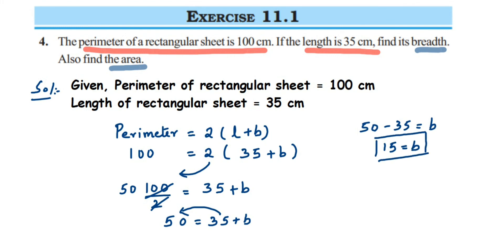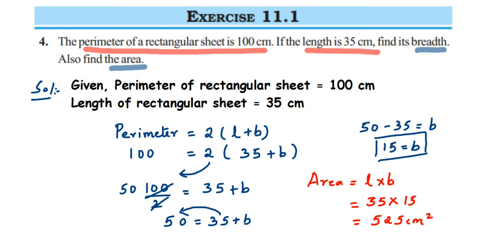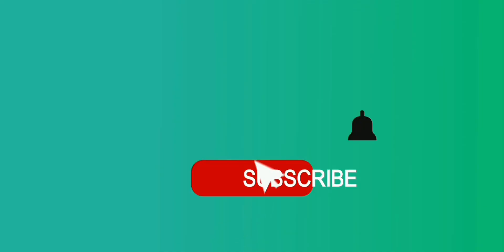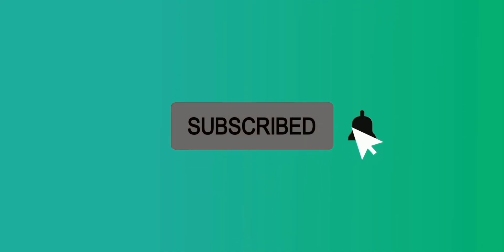Now using the breadth, we can find the area. Area of rectangle is length into breadth. The length from the question is 35 centimeters and the breadth is 15 centimeters. When we multiply these two, we get 525 centimeters square. That's it — I hope this is clear. If you have any question or doubt, drop a comment below. Thank you so much for watching.